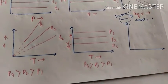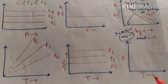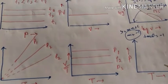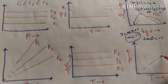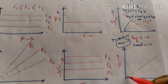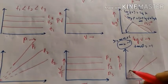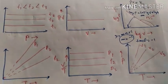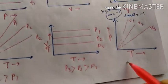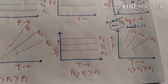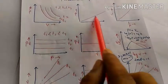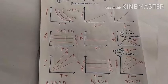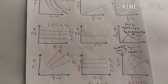From Gay-Lussac's Law, the P versus T graph is a straight line passing through the origin. At different constant volumes V1, V2, and V3, we get different straight lines where V3 is greater than V2 is greater than V1. That gives us six graphs from Boyle's Law, two from Charles' Law, and one from Gay-Lussac's Law.